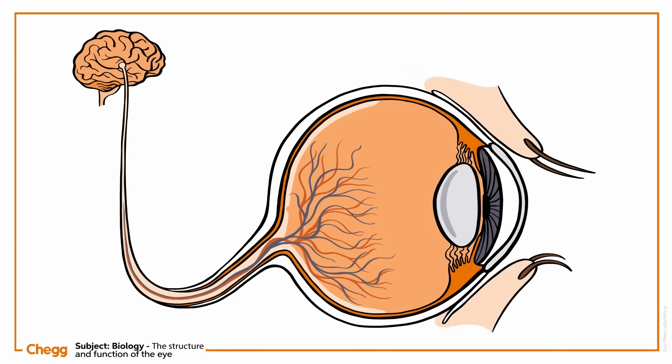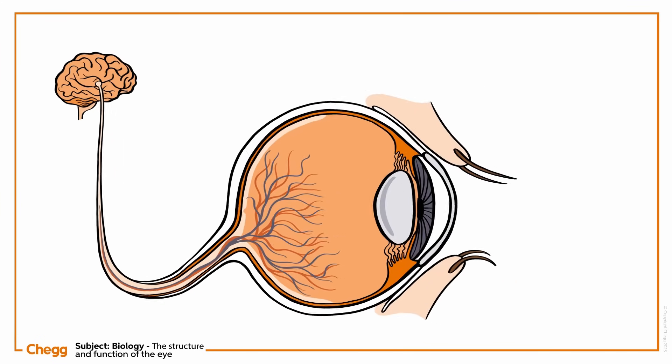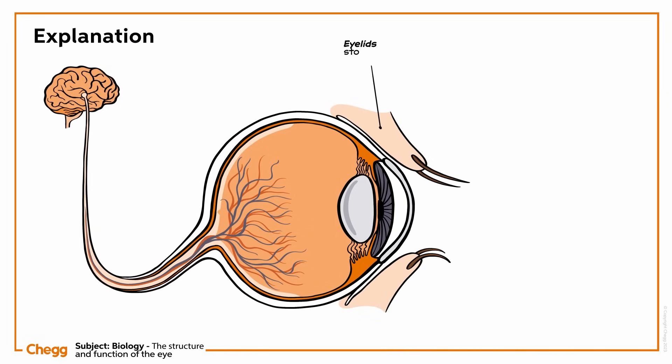Look at this cross-section of an eyeball. Eyeballs are protected by eyelids, which stop dust from entering, and a white outer protective coat.